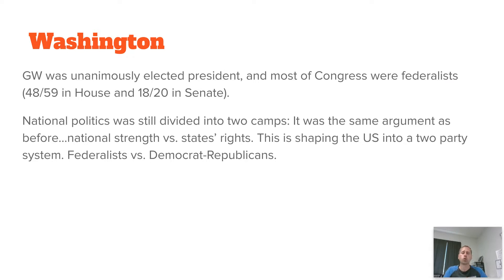With George Washington, he was unanimously elected president, and a good chunk of the members of Congress were federalists. The politics was still divided between the two factions with the Constitution — the federalists and the anti-federalists. And this is shaping us into our first true political parties, the Federalists and the Democrat-Republicans.